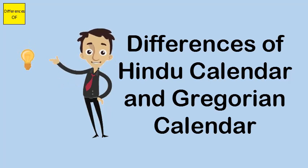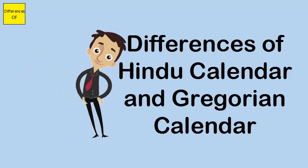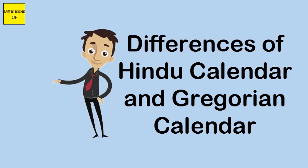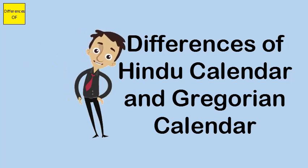The Hindu calendar gives importance to Hindu gods. As for similarities, both are calendars for the calculation of days, and both have 12 months.